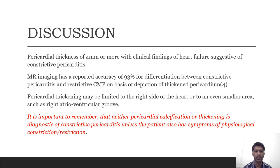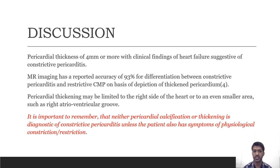MRI has a reported accuracy of 93% for differentiating between constrictive pericarditis and restrictive cardiomyopathy based on depiction of thickened pericardium. Pericardial thickening may be limited to the right side of the heart or even a small area such as the right atrioventricular groove. It is important to remember that neither pericardial calcification nor thickening is diagnostic of constrictive pericarditis unless the patient has symptoms of physiological constriction or restriction.